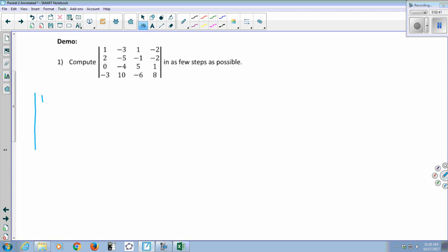All right, so let's see. My original matrix: one, two, zero, negative three; negative three, negative five, negative four, ten; one, negative one, five, negative six; and negative two, negative two, one, eight. Okay.